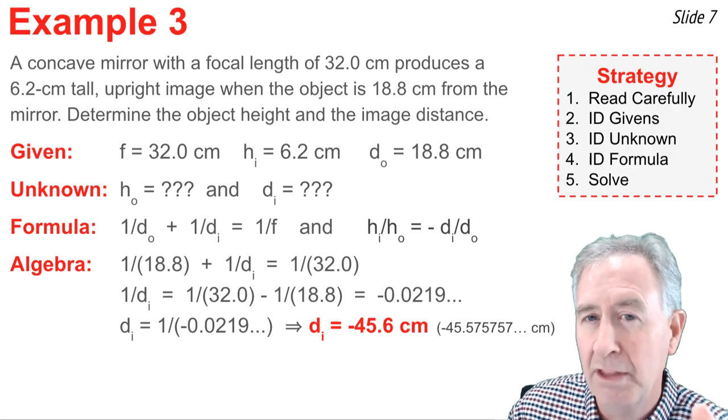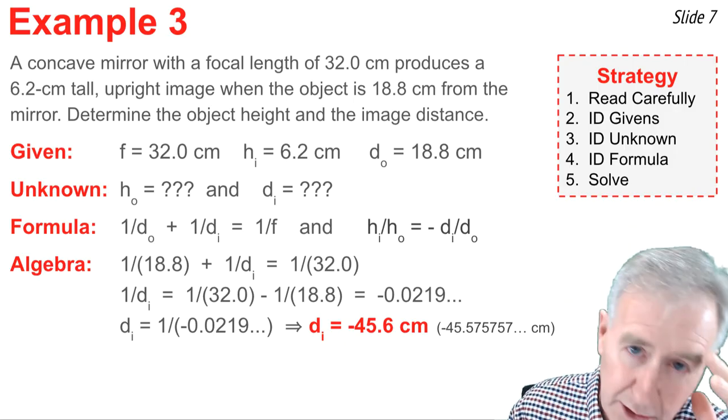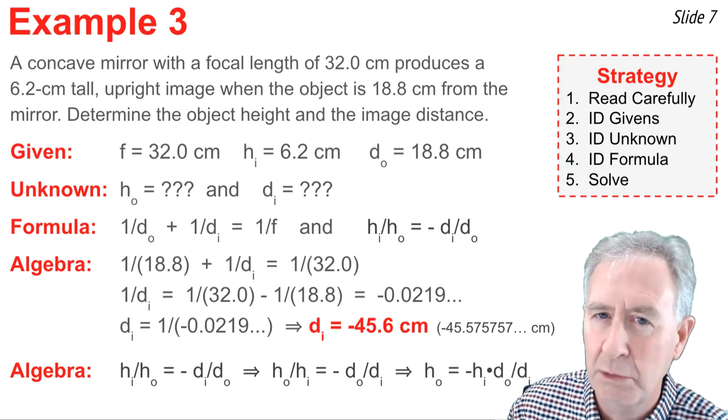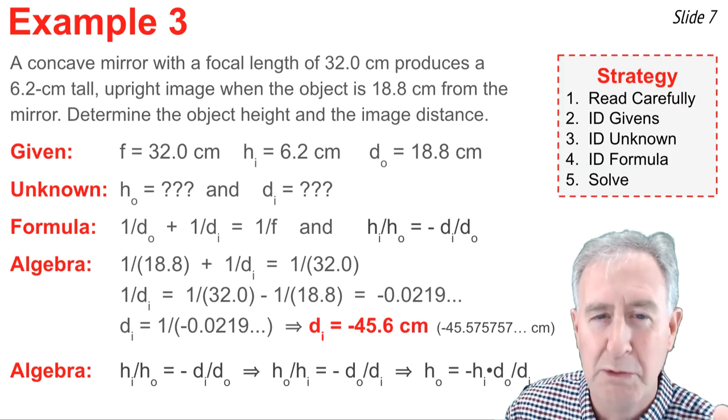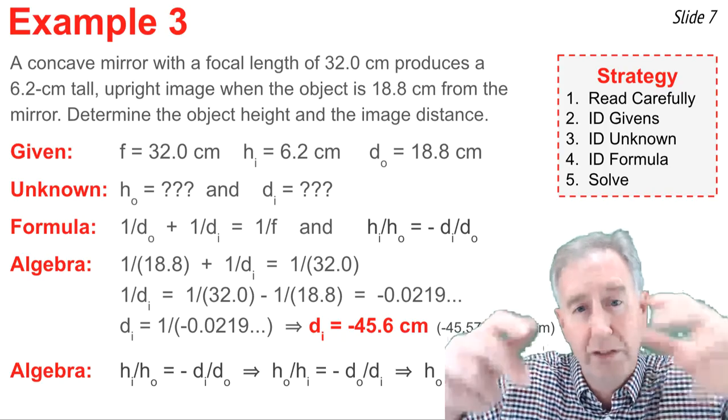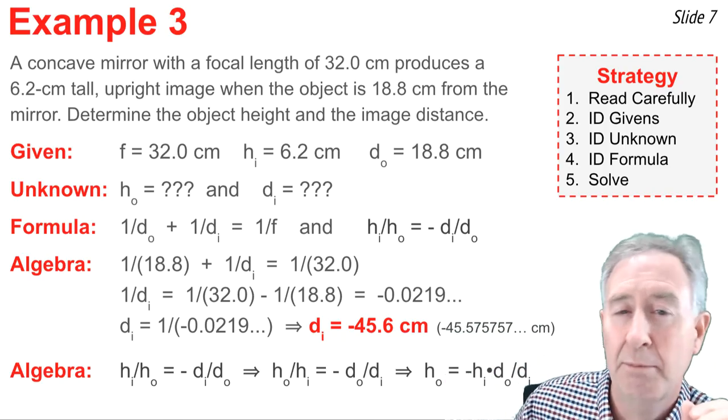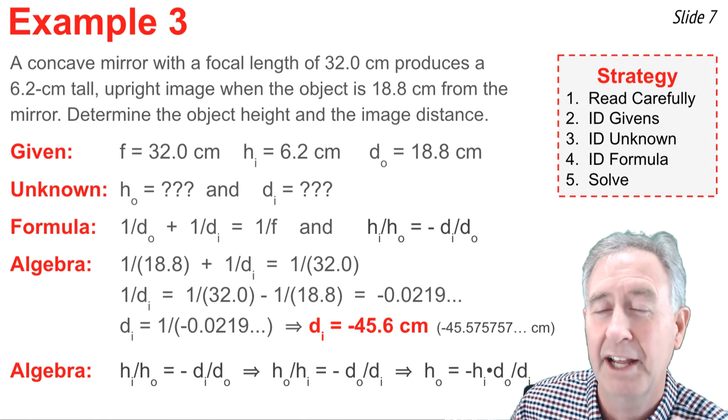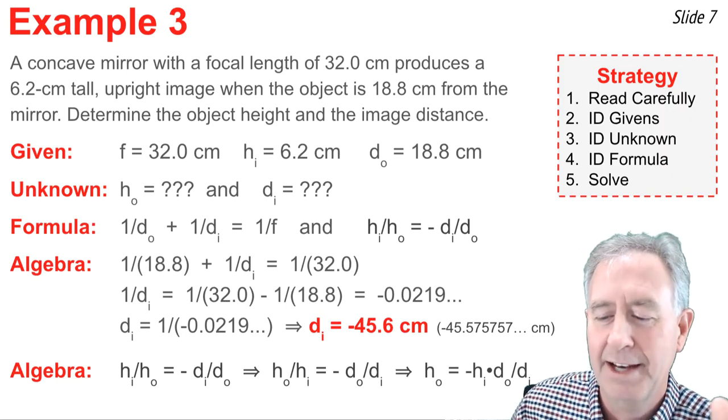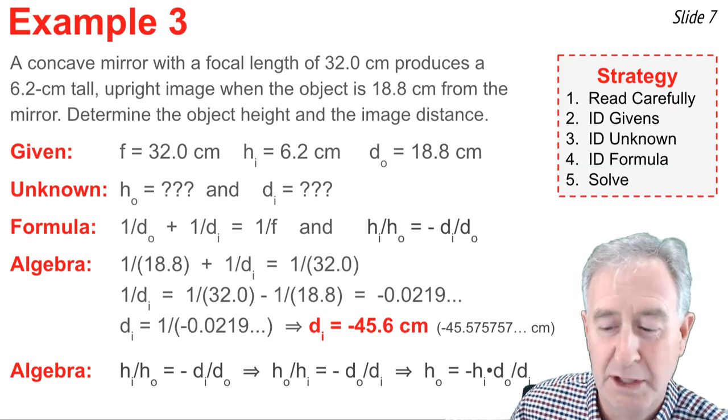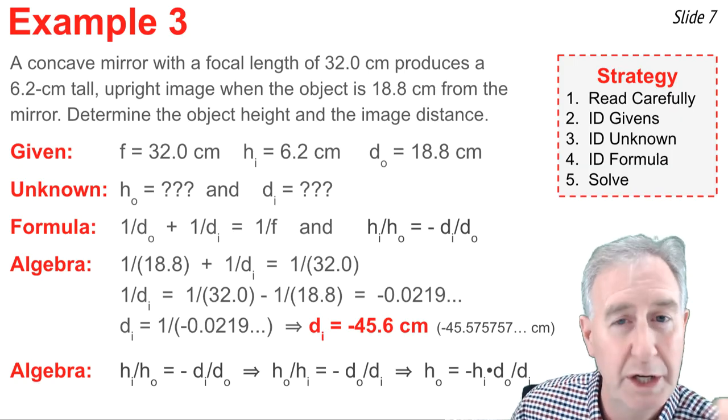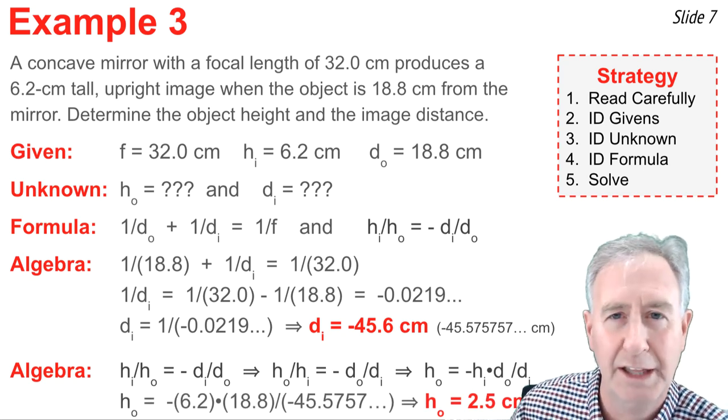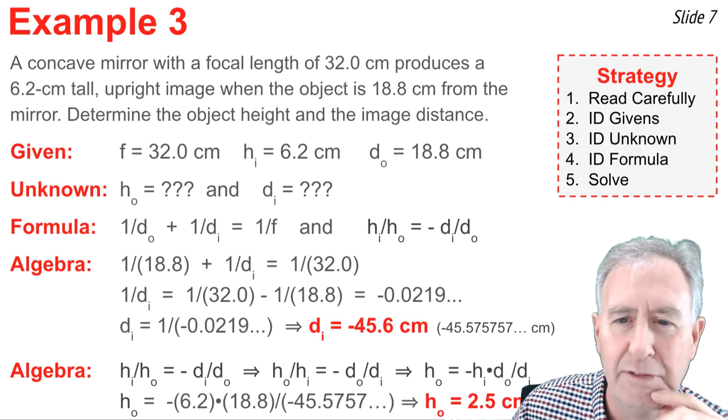Now, I need to solve for the other unknown value, which is h_o. So that's where I'm going to use my other equation, h_i over h_o equal negative d_i over d_o. And I'm going to rearrange it to get h_o by itself in the numerator on one side of the equation. So my first algebra step is to take h_i over h_o equal negative d_i over d_o, and flip both sides. Then after I've done that, I'm going to multiply both sides of the equation by h_i. The equation now becomes h_o equal negative h_i times d_o divided by d_i. And now I can substitute everything I know because I was given the value of h_i. I was given the value of d_o and I calculated the value of d_i. So I substitute that in and I crank out my answer for the value of the object height. I know it should be positive and it is, it's 2.5 centimeters.